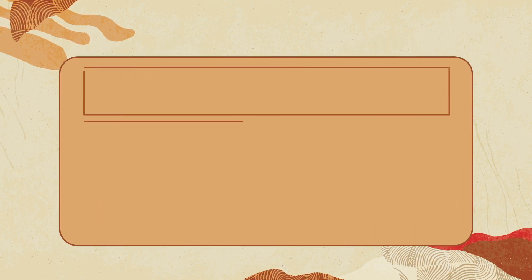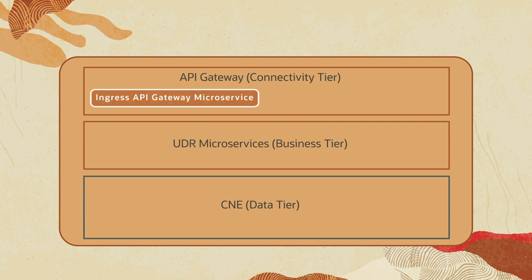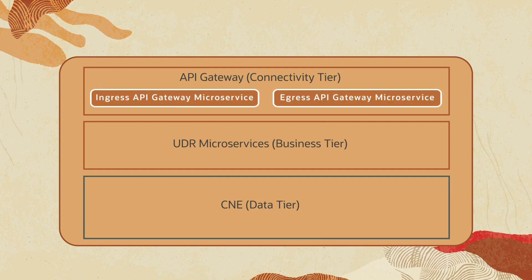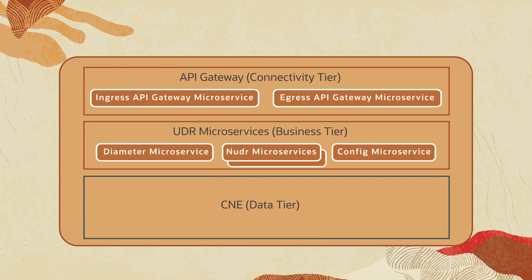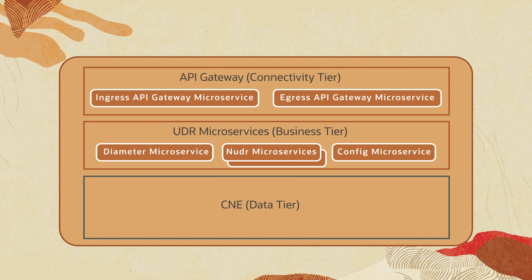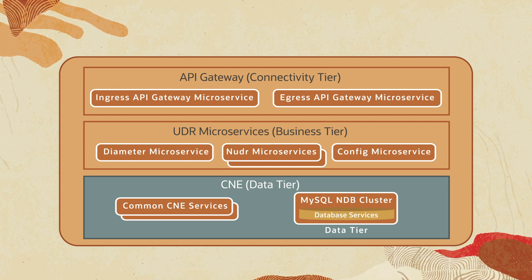UDR has a three-tier architecture: connectivity tier, business tier, and data tier. The connectivity tier load balances the traffic via Ingress API Gateway and Egress API Gateway, and provides required authentication and TLS support. The business tier provides the business logic of 5G UDR, has microservices, and supports both diameter and service-based interface for other consumer NFs. The data tier uses Oracle MySQL NDB Cluster, CGE Edition, as the back-end database, which provides high availability and geo-redundancy capabilities.